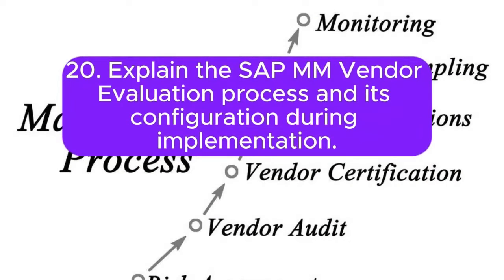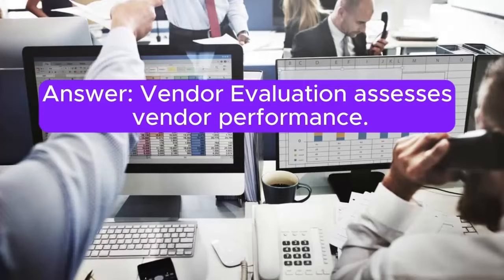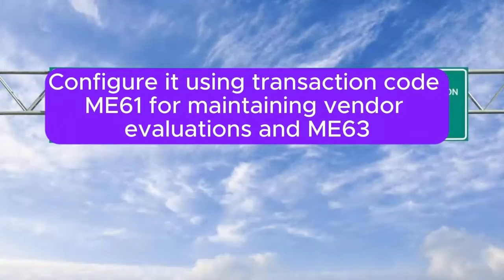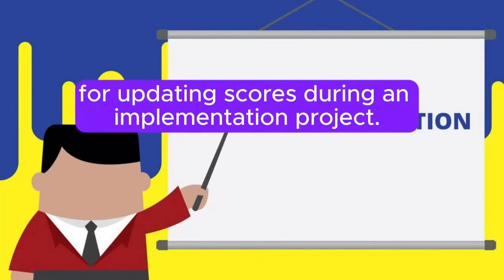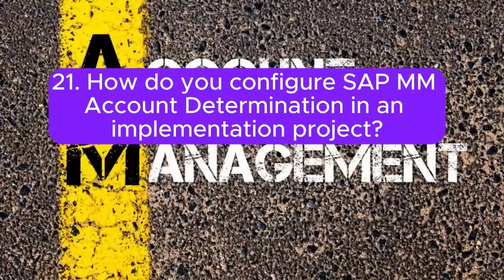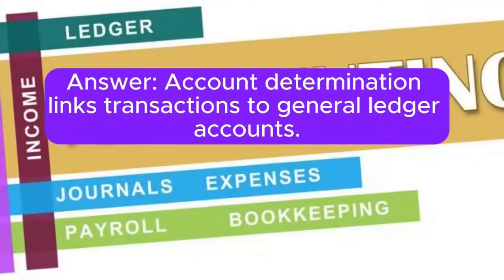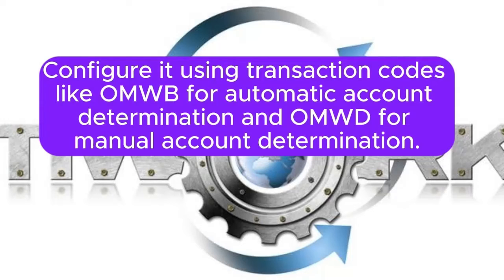Question 20: Explain the SAP MM vendor evaluation process and its configuration during implementation. Answer: Vendor evaluation assesses vendor performance. Configure it using transaction code ME61 for maintaining vendor evaluations and ME63 for updating scores during an implementation project. Question 21: How do you configure SAP MM account determination in an implementation project? Answer: Account determination links transactions to general ledger accounts. Configure it using transaction codes like OBYC for automatic account determination and OMWD for manual account determination.